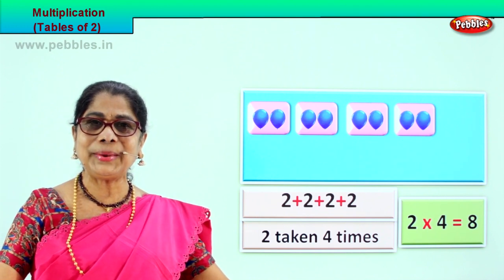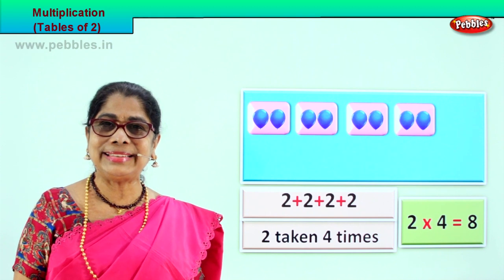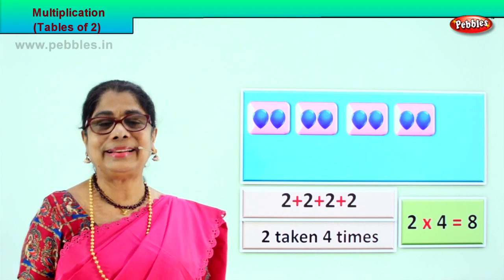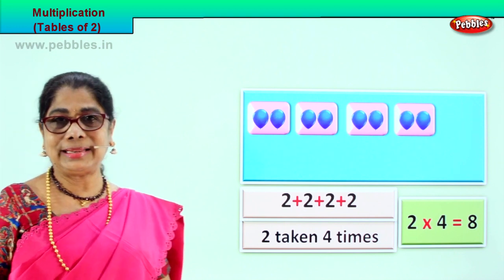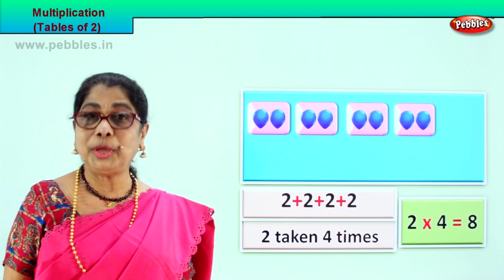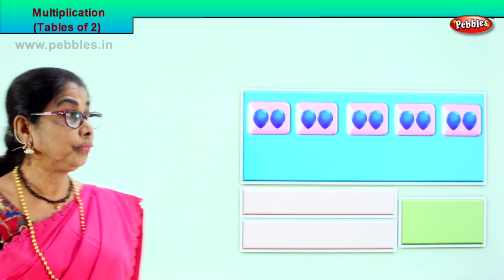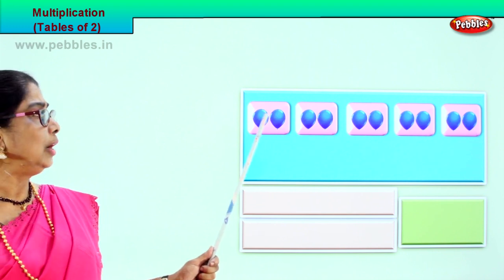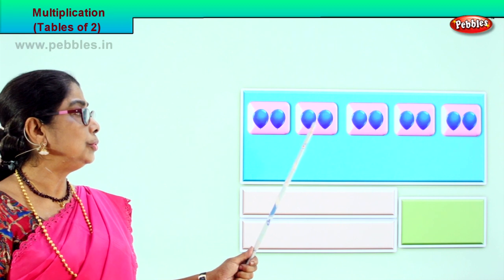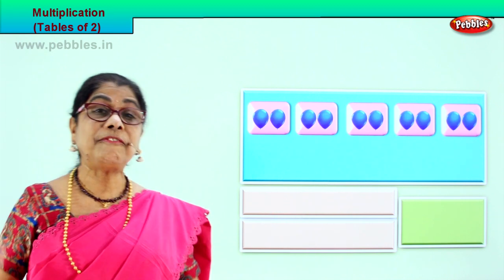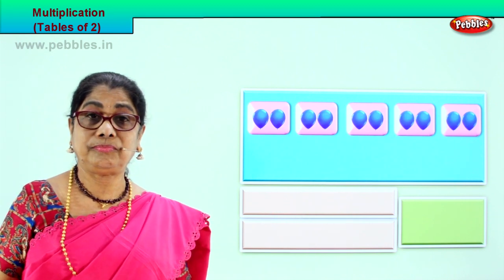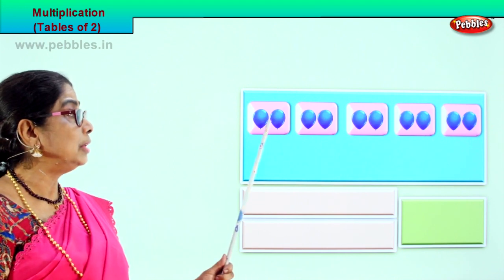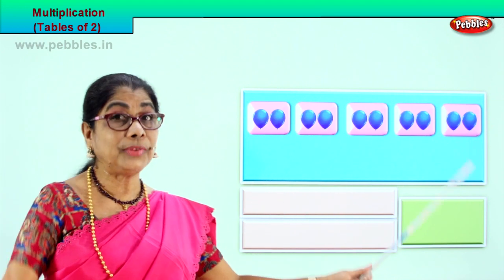Did you enjoy? It's very interesting, isn't it? You can see, read, and say the answer. Good. Let's look at another grouping of two. Here we have one group of two, two, three, four — there are five groups of two. Two taken how many times? One, two, three, four, five times.